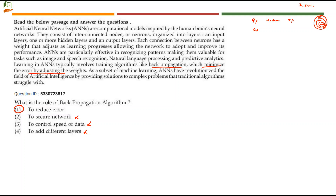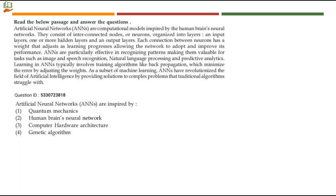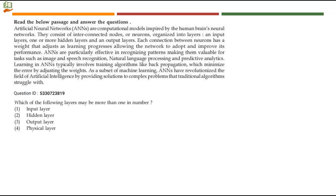Next question: artificial neural networks are inspired by — quantum mechanics, human brain's neural network, computer hardware architecture, or genetic algorithm? Human brain's neural network is what is given directly in the passage, so option number 2 is the right answer.